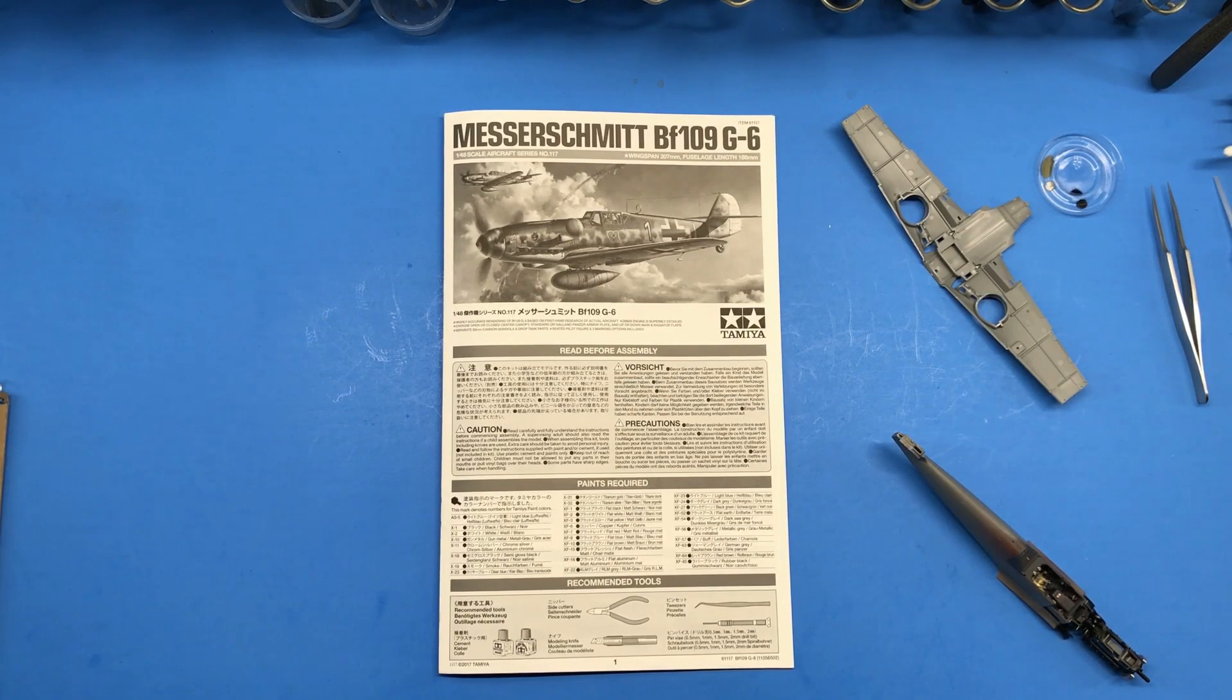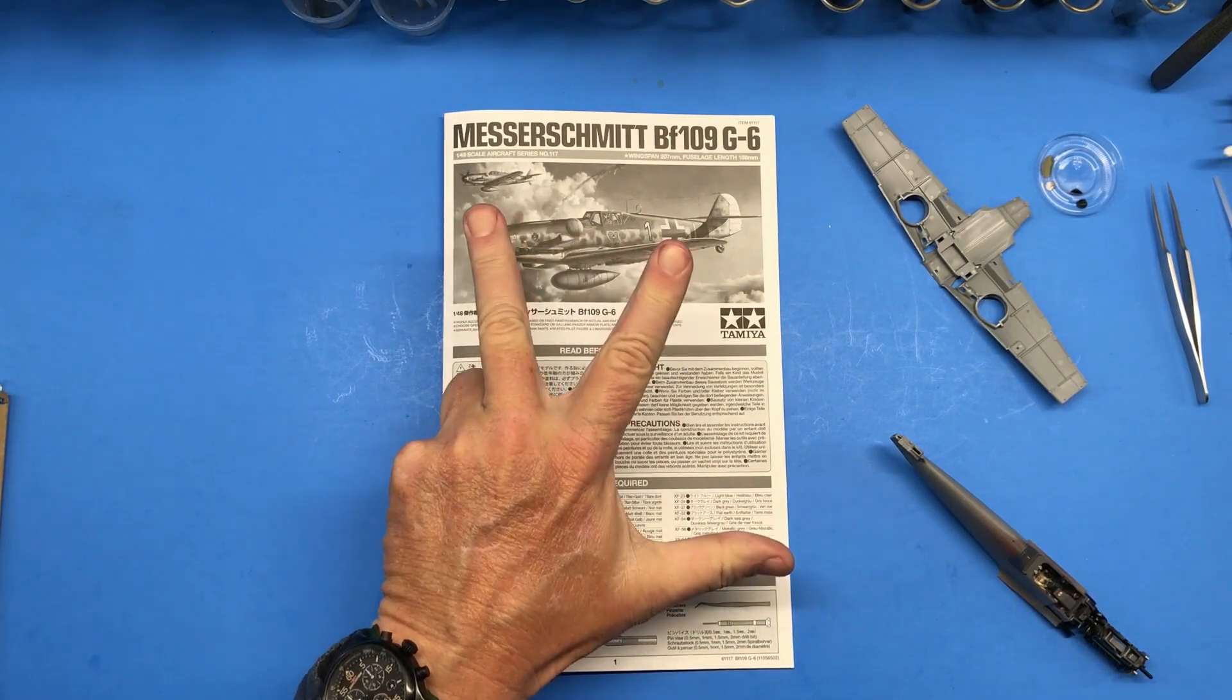Hi and welcome back to Plastic Models by Regular Dude and the Tamiya 1:48 scale BF-109 G-6 project part three.